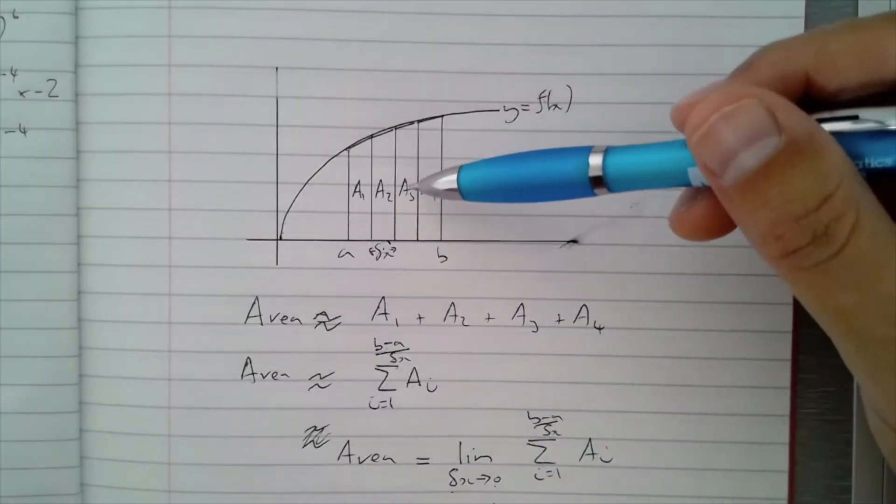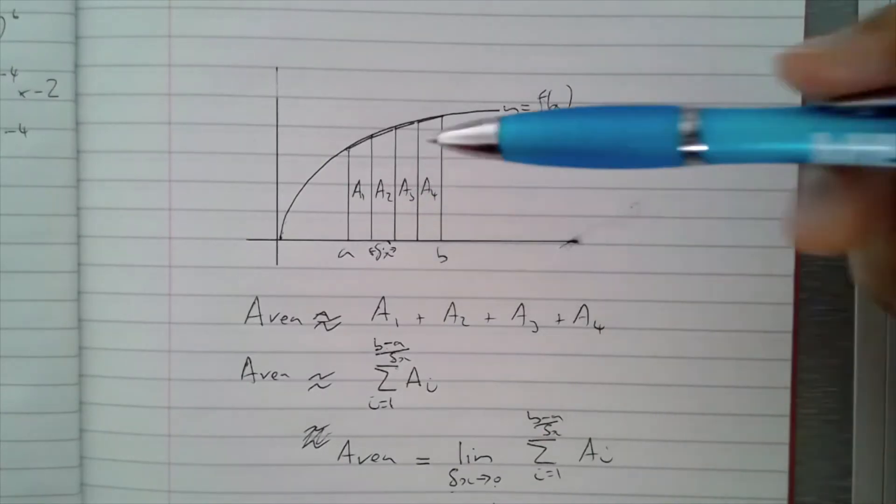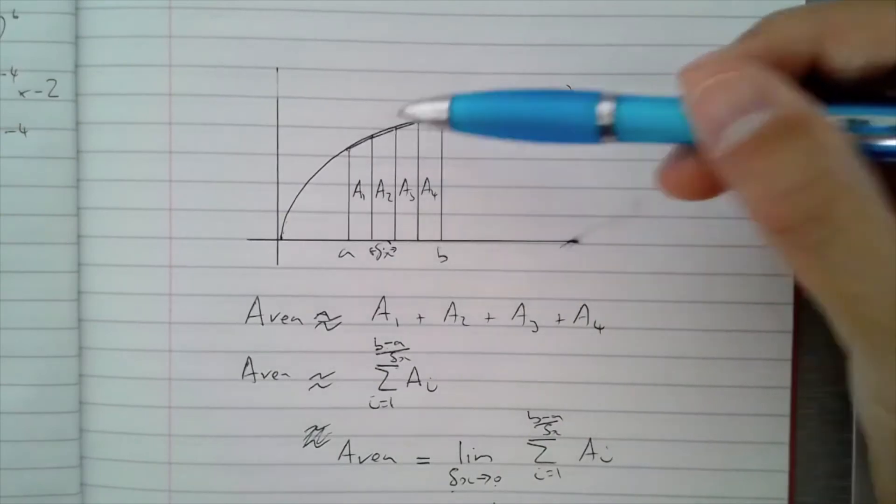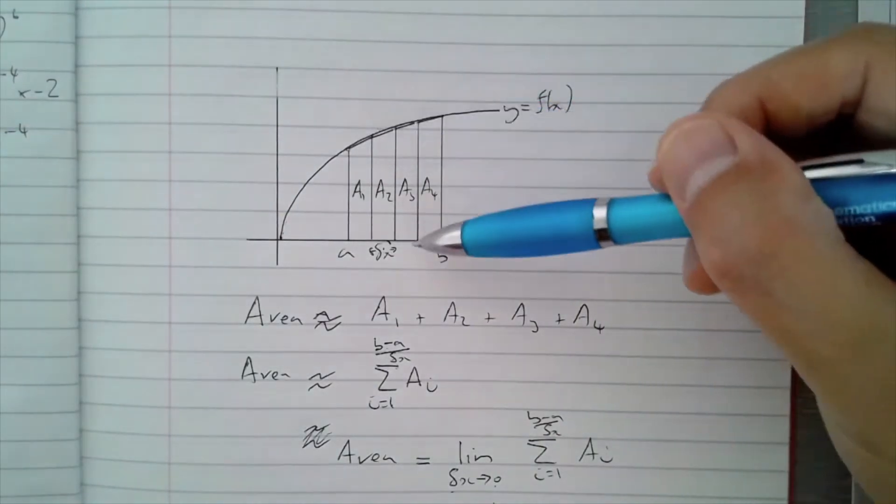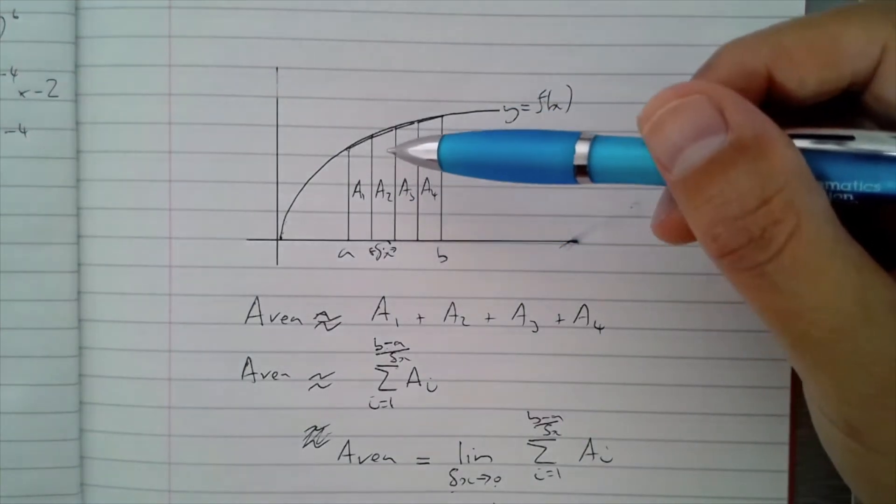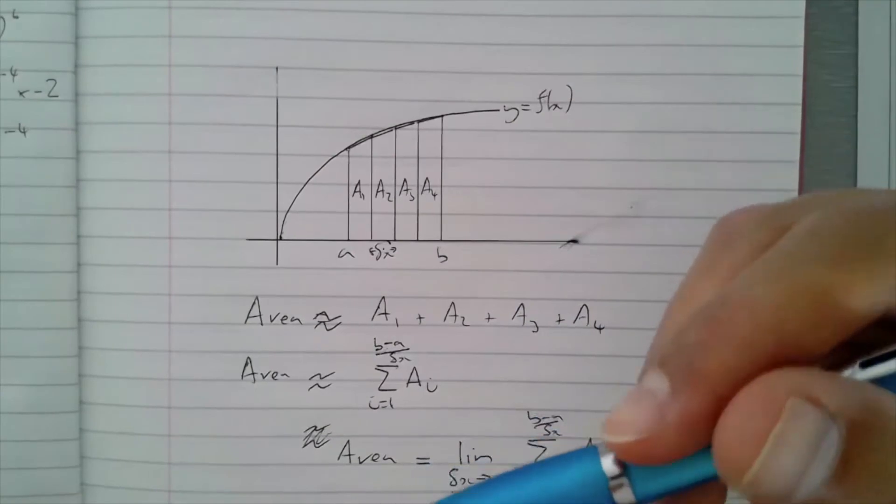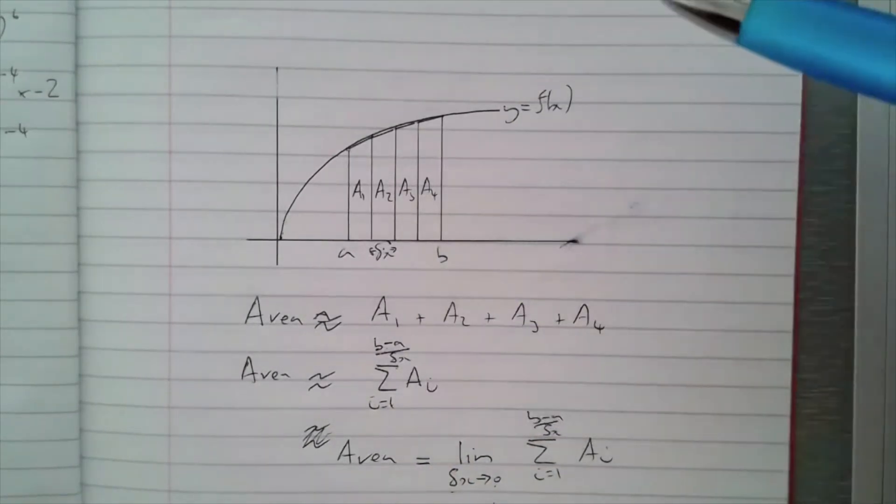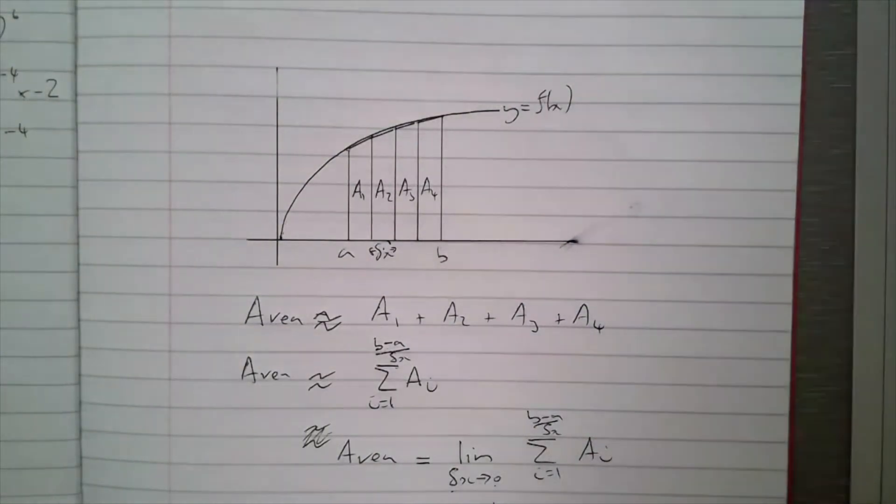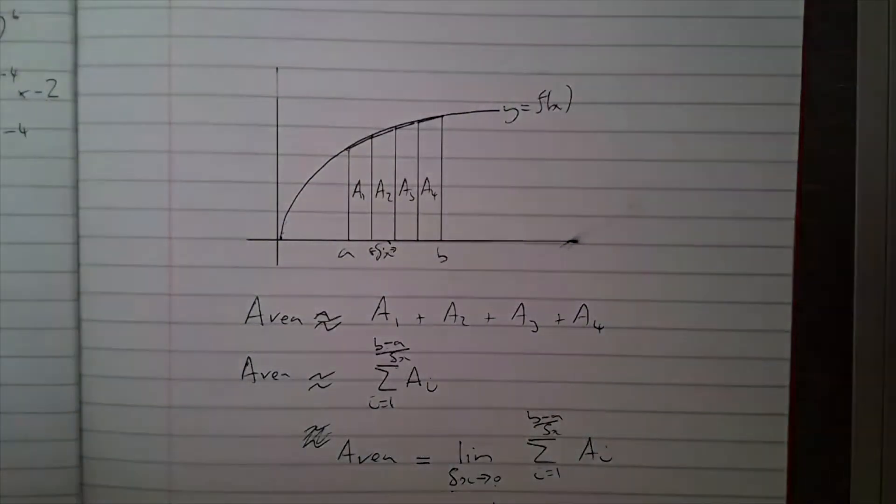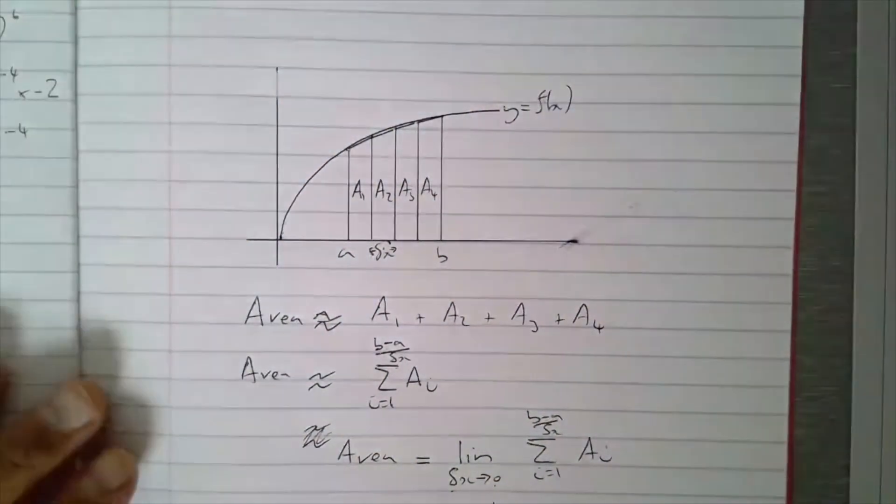We wouldn't actually use trapeziums to do this - we'd actually use rectangles. We'd do rectangles underneath, we'd also do rectangles above, and as delta x gets smaller, those two areas would get closer and closer together. So if you go on to university and start doing analysis, you'll come across how to define this integral properly. You would do something called upper and lower sums, and they use rectangles not trapeziums. But this will do for where we are right now.